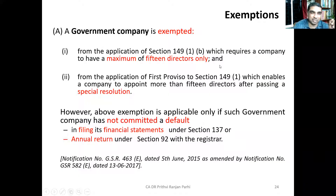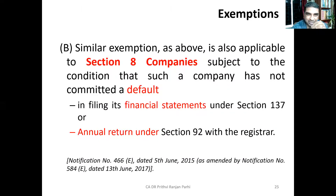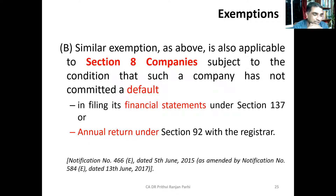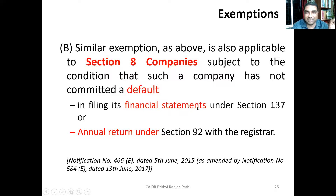There is one more exception — this time for Section 8 companies, which are charitable companies that cannot distribute profit by way of dividends. These companies can also appoint more than 15 directors without passing a special resolution. However, similarly, the condition applies: they must not have committed any default in filing the financial statements or annual returns to the Registrar. If that default is committed, this exemption is lost.